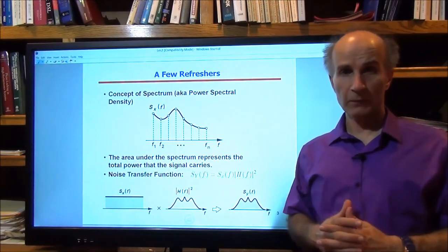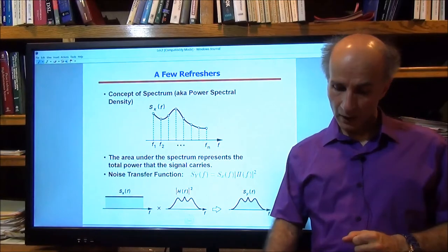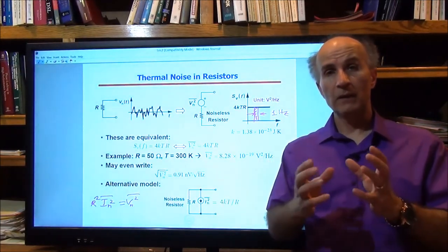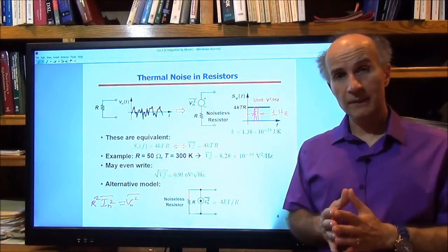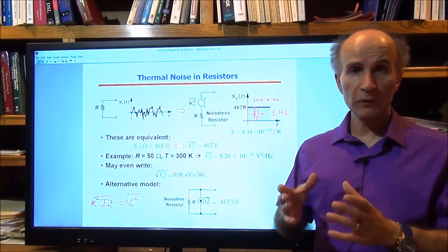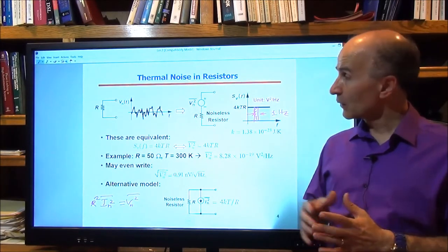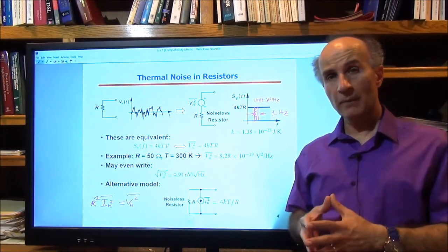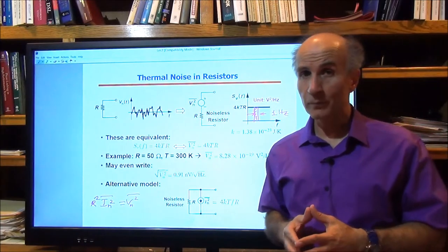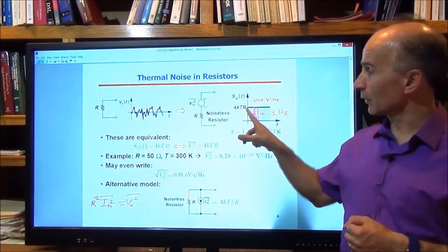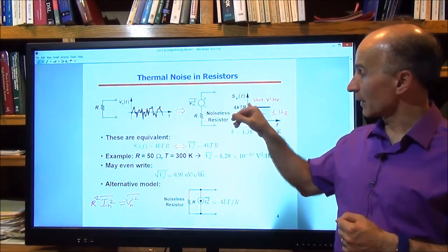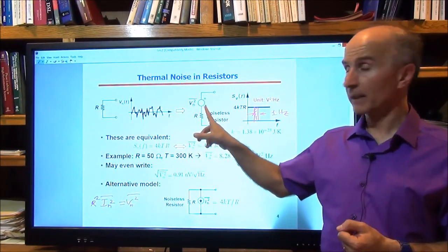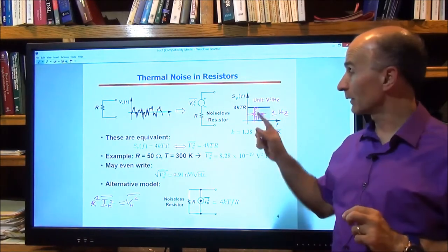This theorem is extremely critical for anything we want to do in relation to noise. Now let's look at thermal noise in resistors. At a finite temperature, the carriers in the resistor have thermal agitations, and as a result they produce a random noise voltage across the resistor. The mean value is still zero. We go to the frequency domain and look at the spectrum, which turns out to be flat — white — with a spectral density of 4kTR, from zero to infinity. The resistor itself is modeled as noiseless, with a voltage source in series with it having that spectrum.